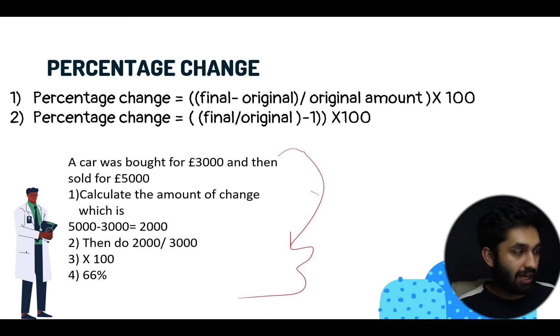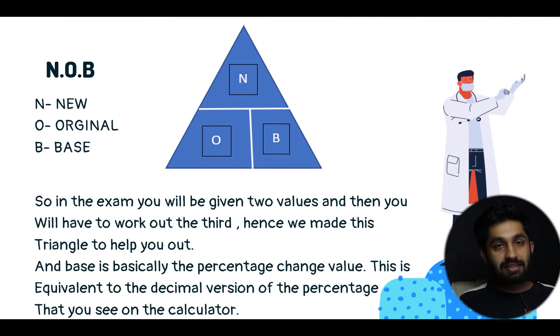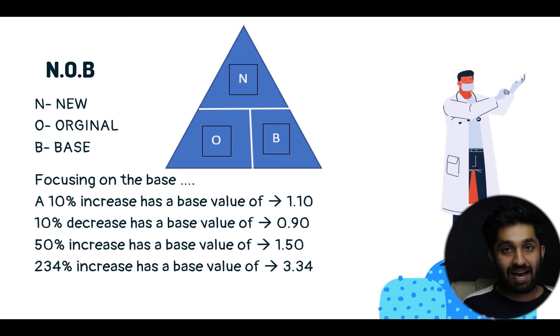This is NOB, the one I used, and I found it really helpful. So let's take a look at what NOB actually is. NOB is N for new, the new value; O is original; B is base. Now you're probably wondering, what is base? Base is basically the percentage change value but in decimal form. I really like this because I don't want to mess around multiplying by 100 or dividing by 100.